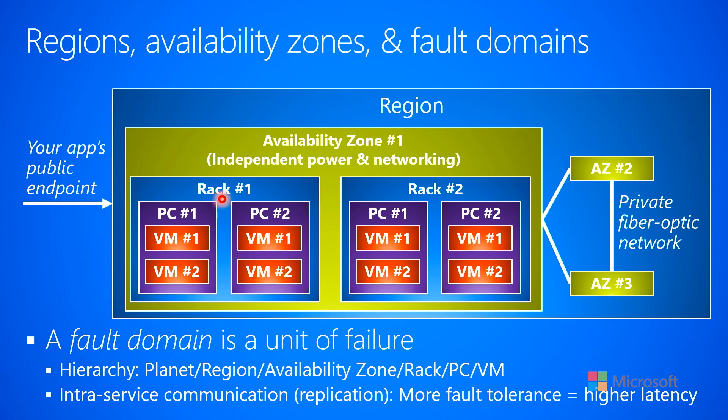Replicating across two different racks is better, but if the availability zone goes down, you've lost all the replicas. Replicating across availability zones within the region is better, but if the whole region goes down, you've lost all the data. And then, of course, you could replicate to different regions.